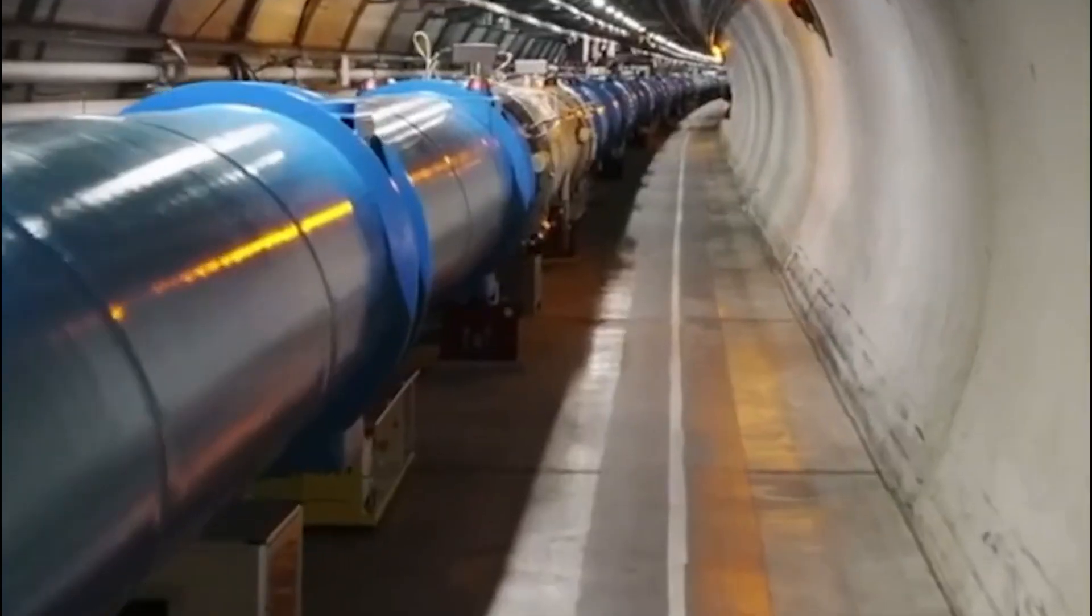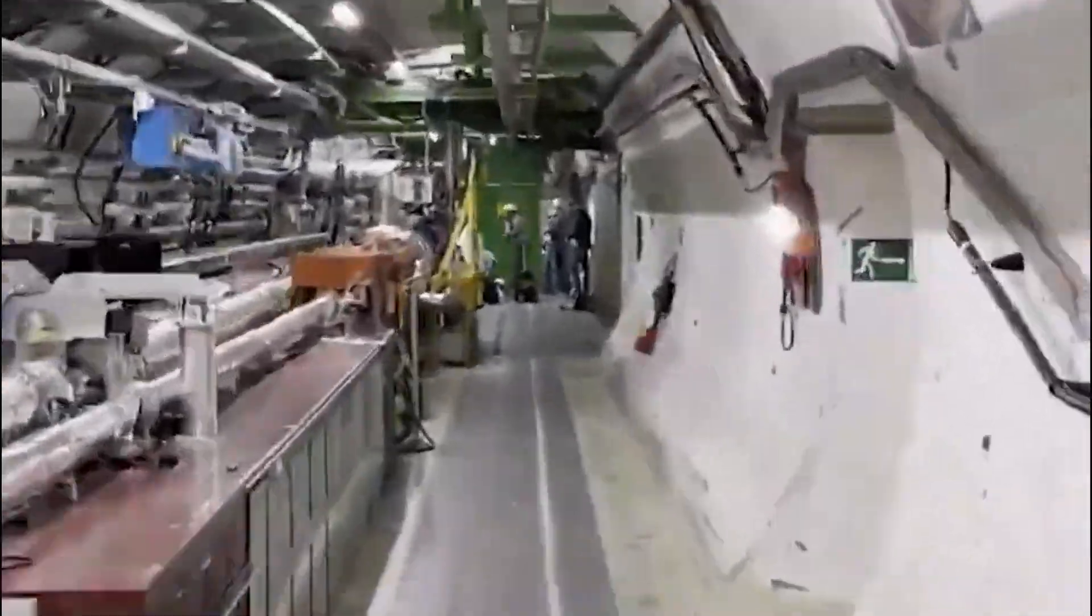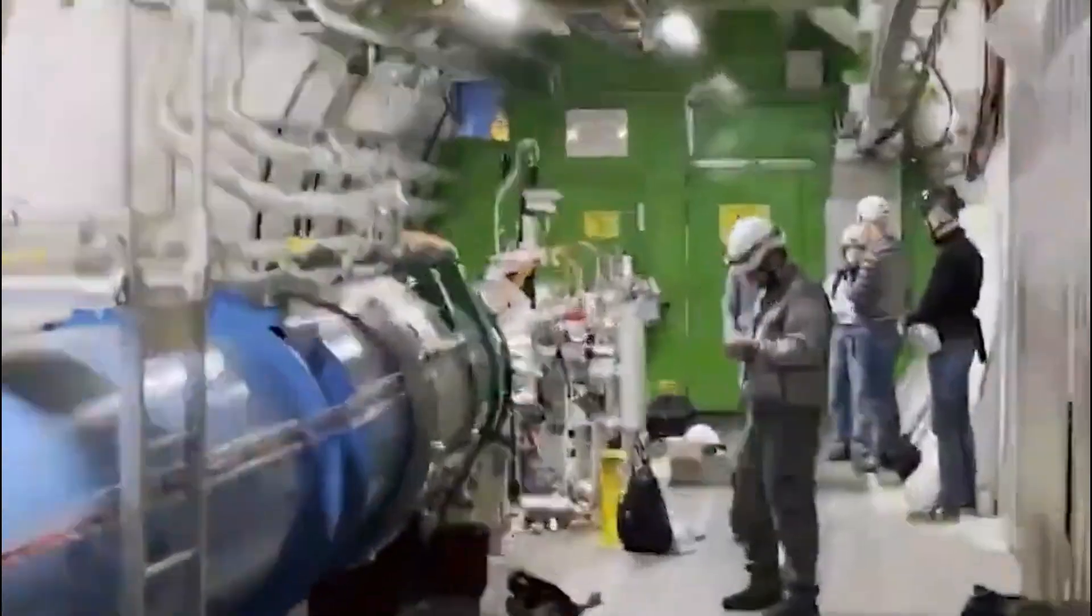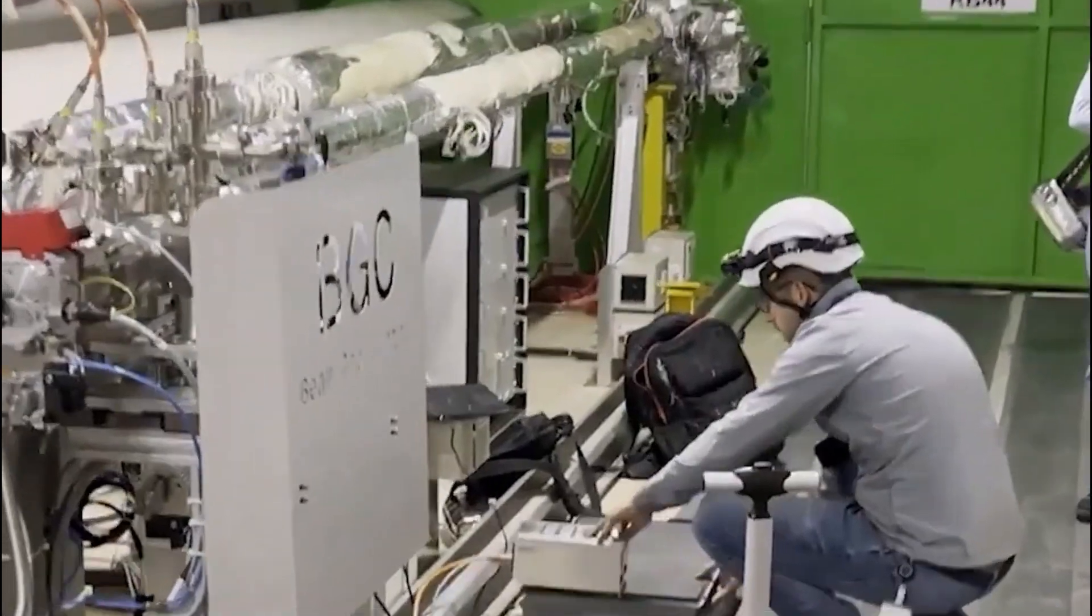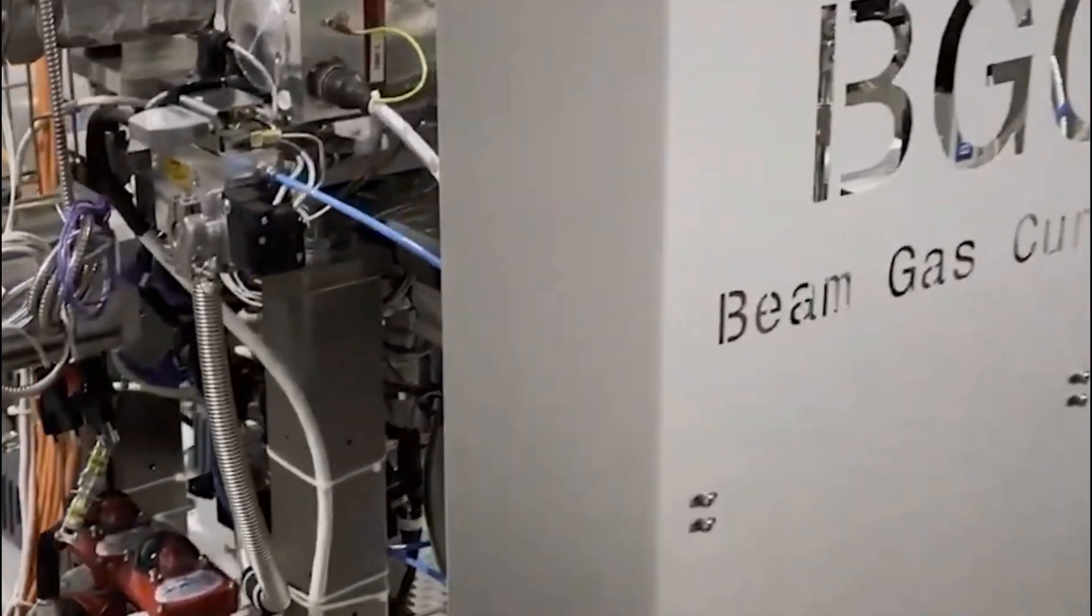The LHC comprises two parallel beam pipes that are constantly kept at an incredibly low temperature of minus 271.3 degrees Celsius, which is even colder than outer space, thanks to the use of liquid helium. These pipes, measuring an impressive 27 kilometers in length, are encircled by powerful superconducting magnets.